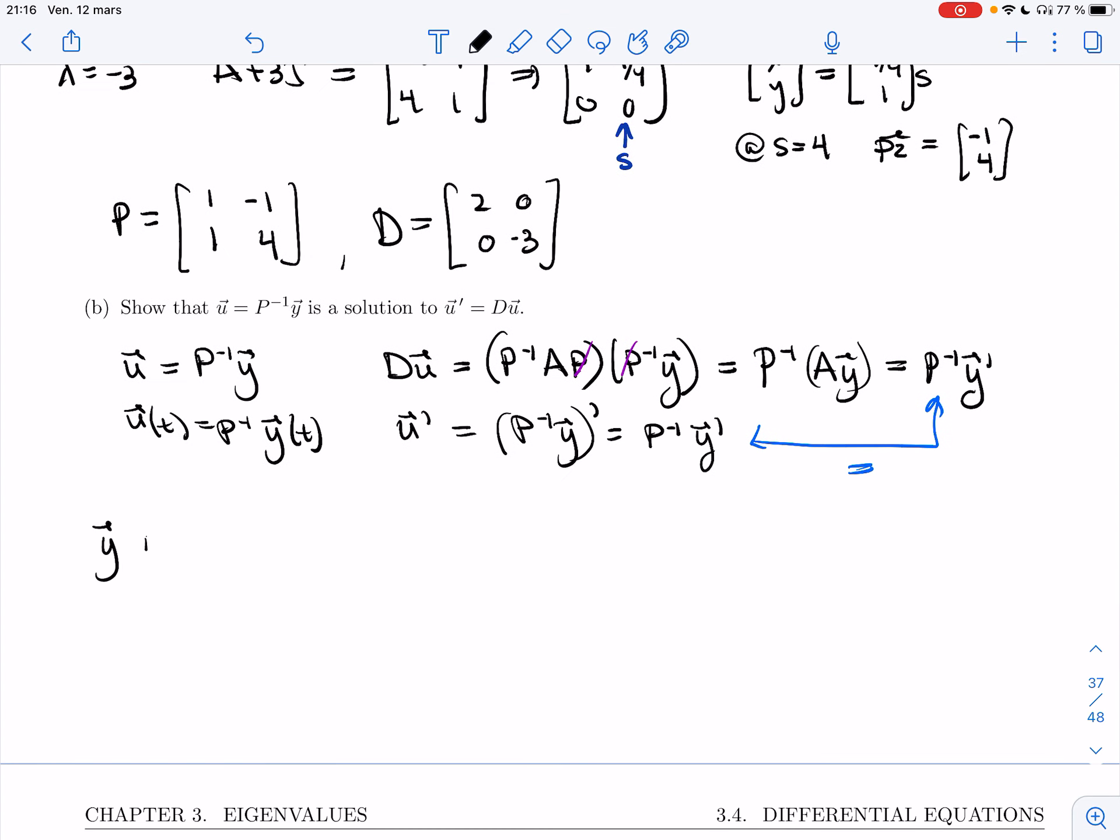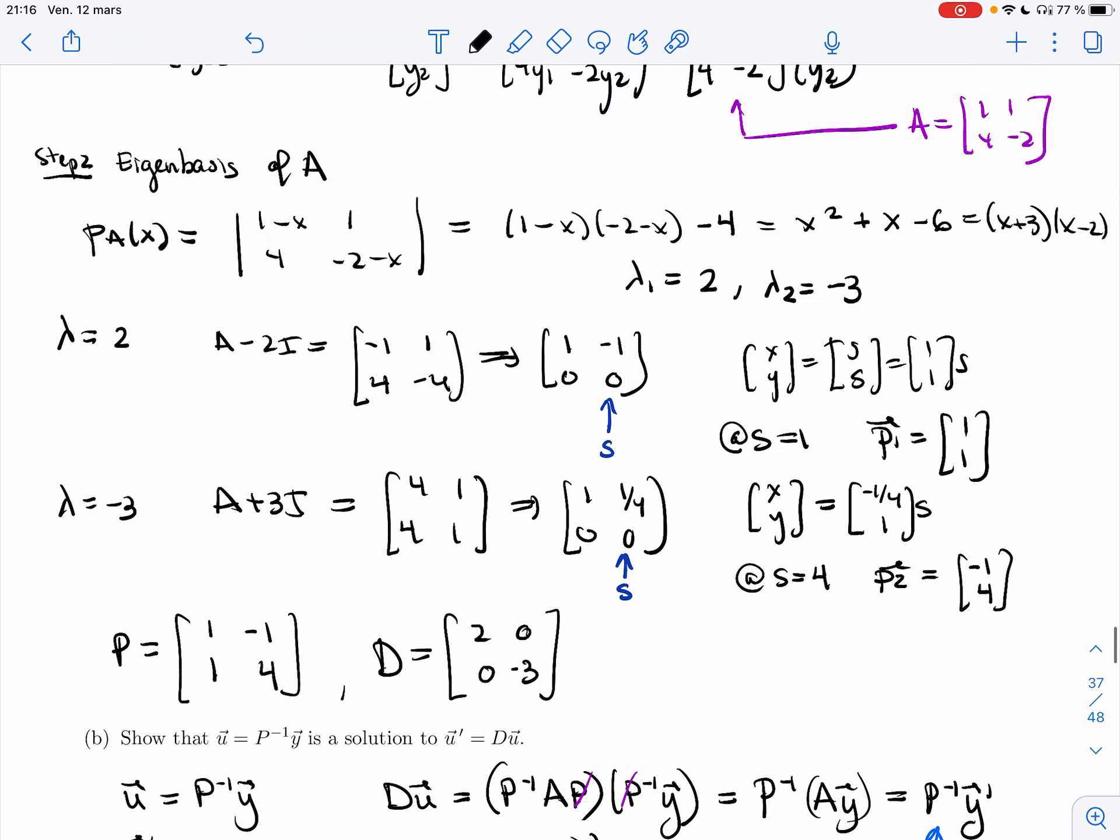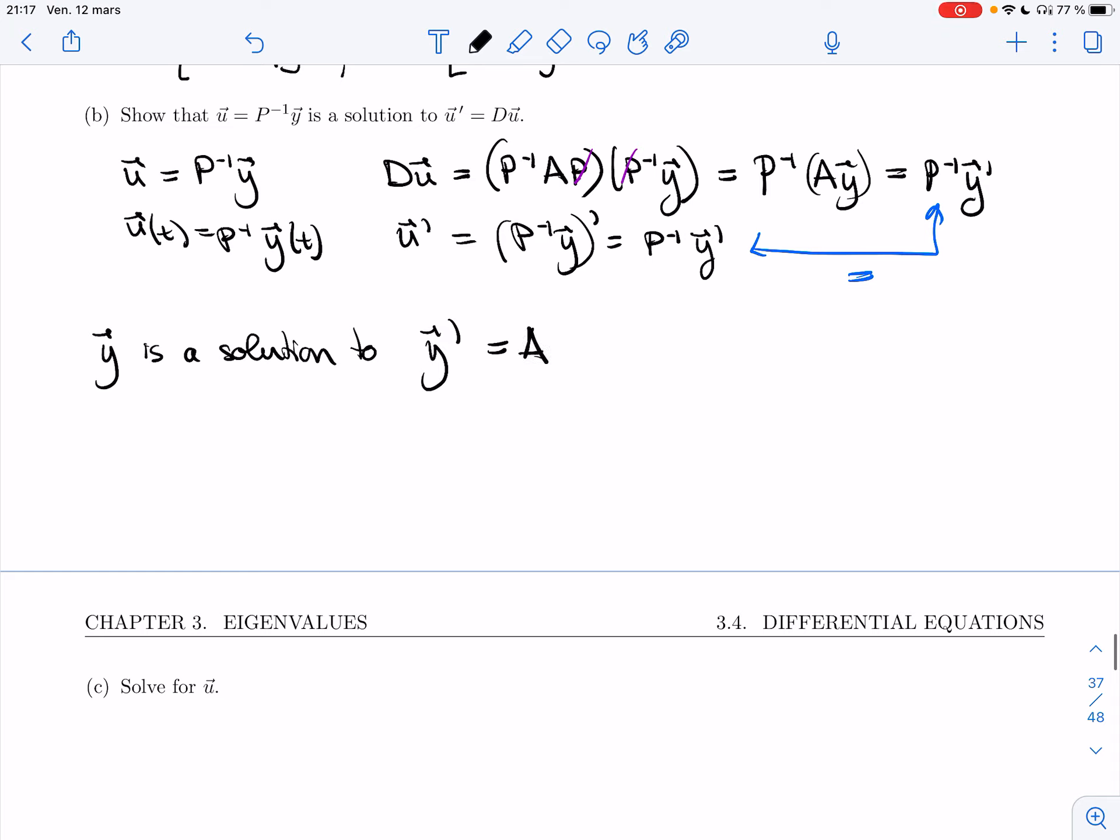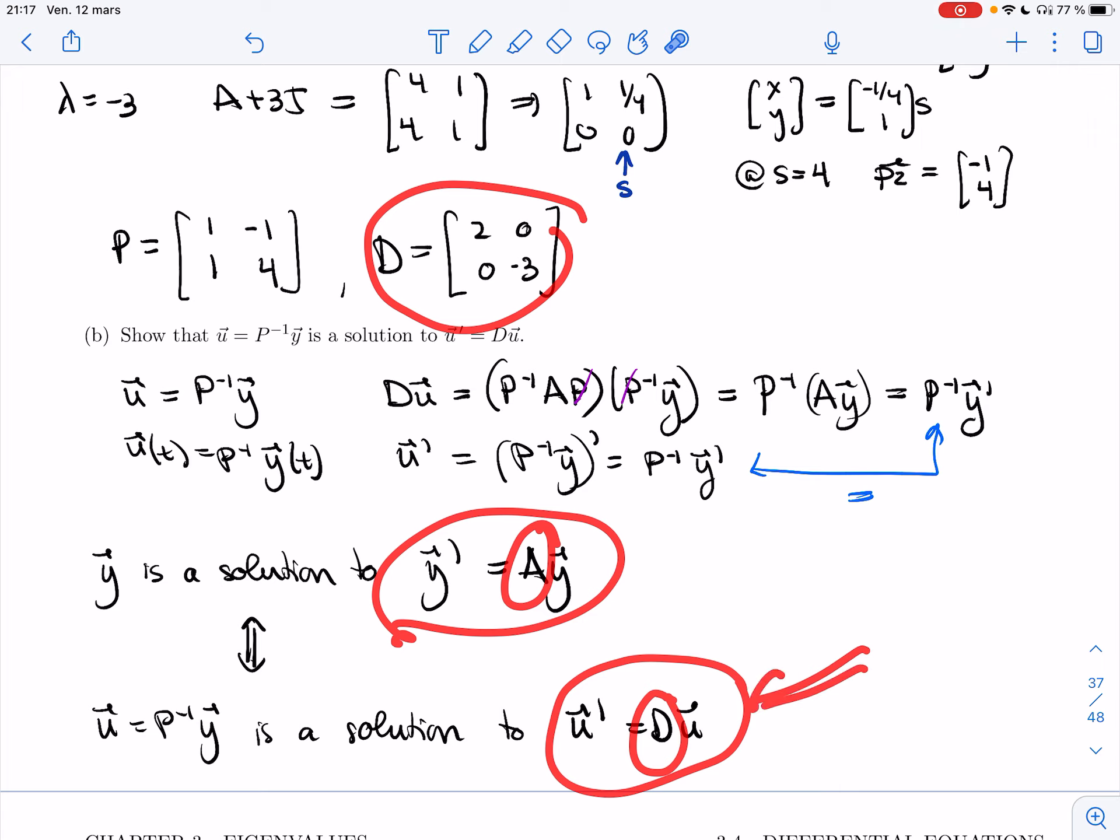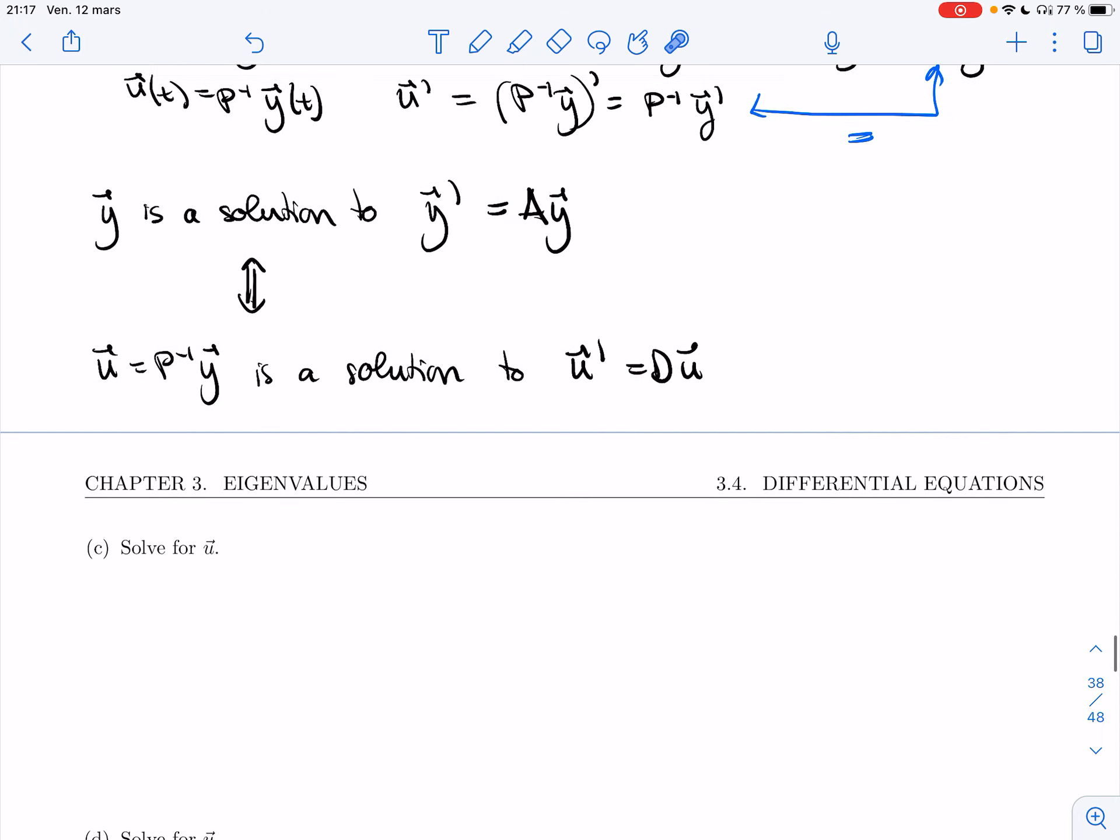And so, yes. So y is a solution to y prime equals Ay, if and only if u, which is P inverse of y, is a solution to u prime equals Du. All right. So what's nice, this is a complicated system with a complicated matrix. This is a simple system because D is just a diagonal matrix. So we can solve this system using the proposition. But once you know u, getting back to y is easy. All I have to do is multiply by P.